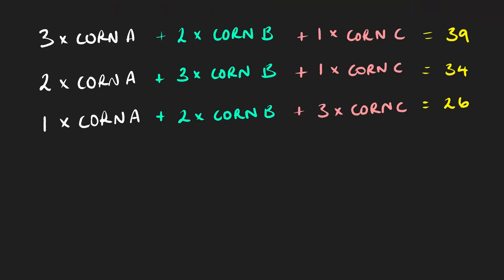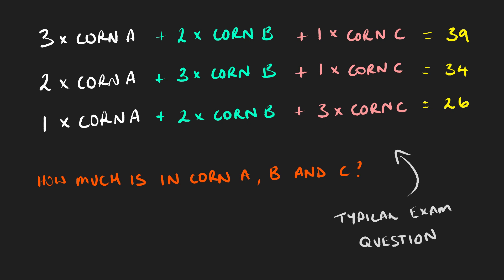It turns out that the earliest form of using numbers in this grid fashion — what we now know to be a matrix — was in a book called The Nine Chapters on Mathematical Art. In this book, there was what you'd swear was a modern-day mid-level high school simultaneous equation question. It was talking about three fields that used three types of corn, and you had to find out how much corn was in each different type of corn bag. When was this book written? 200 BC.